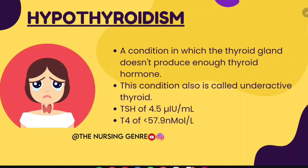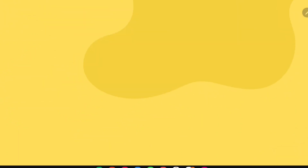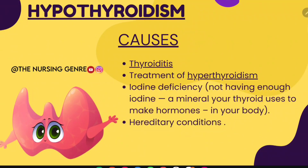Hypothyroidism is a condition in which the thyroid doesn't produce enough thyroid hormone — also called underactive thyroid. Lab values: TSH (thyroid stimulating hormone) is greater than 4.5, and T4 is less than 57.9 nmol.